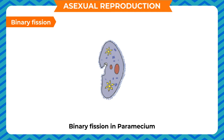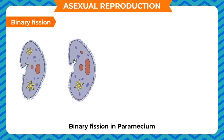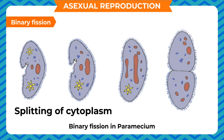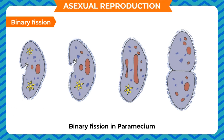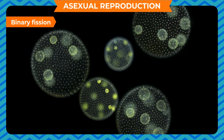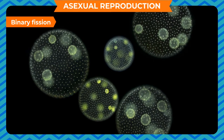Binary Fission: In the process of binary fission, the nucleus first divides into two. This is followed by splitting of cytoplasm across the middle, resulting in the formation of two identical daughter cells. This is seen mostly in unicellular organisms.